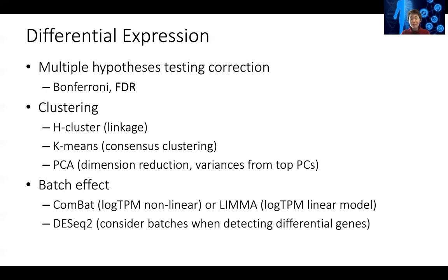For k-means, determining k is a practical challenge. Most people can only deal with k smaller than seven, since more than seven clusters become hard to absorb. If you only have two conditions — such as drug treatment versus no treatment — you might not even need k-means of seven; you just ask what genes are up-regulated and what genes are down-regulated. K-means with k=7 is more useful for something like a time course with five time points.